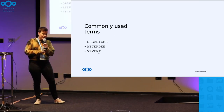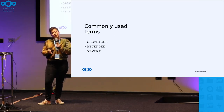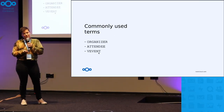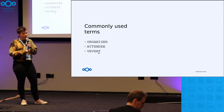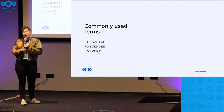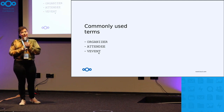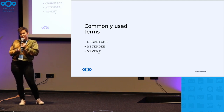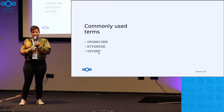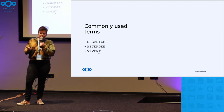Let me first get into the commonly used terms we're going to be talking about today. We have the organizer, which is the person that sends or cancels an invitation. We have the attendee, which is the person who receives an invitation. And the vEvent is the text file that contains all the information about the event.